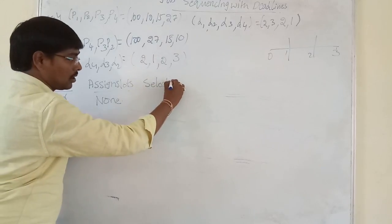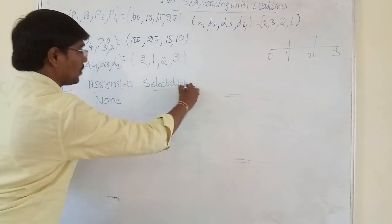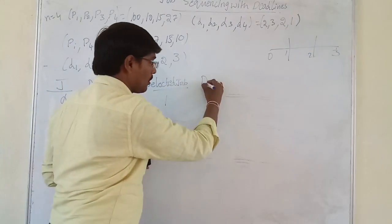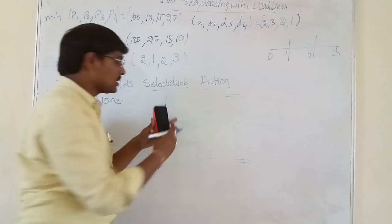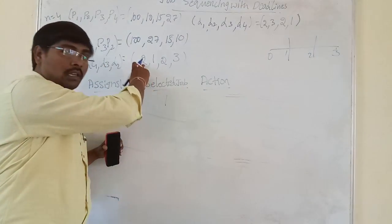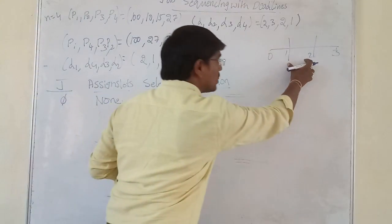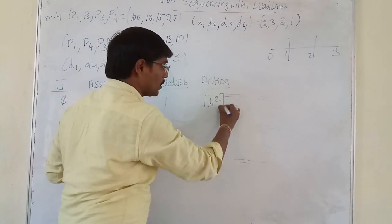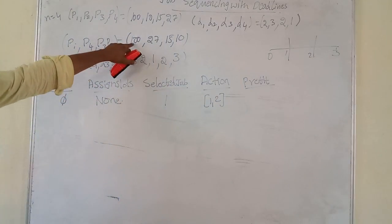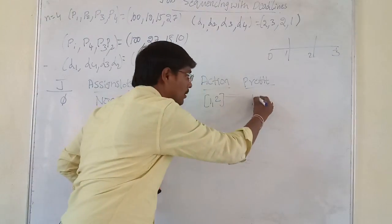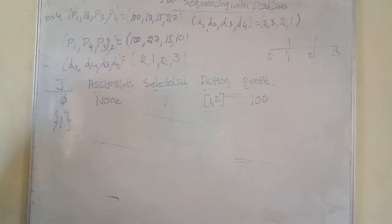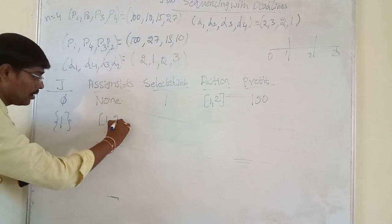Step by step we are selecting one job. First we are selecting Job 1. The deadline for Job 1 is 2, so we are allocating slot (1, 2). By allocating slot (1, 2) we are getting a profit of 100. Our solution contains Job 1 and the assigned slot is (1, 2).